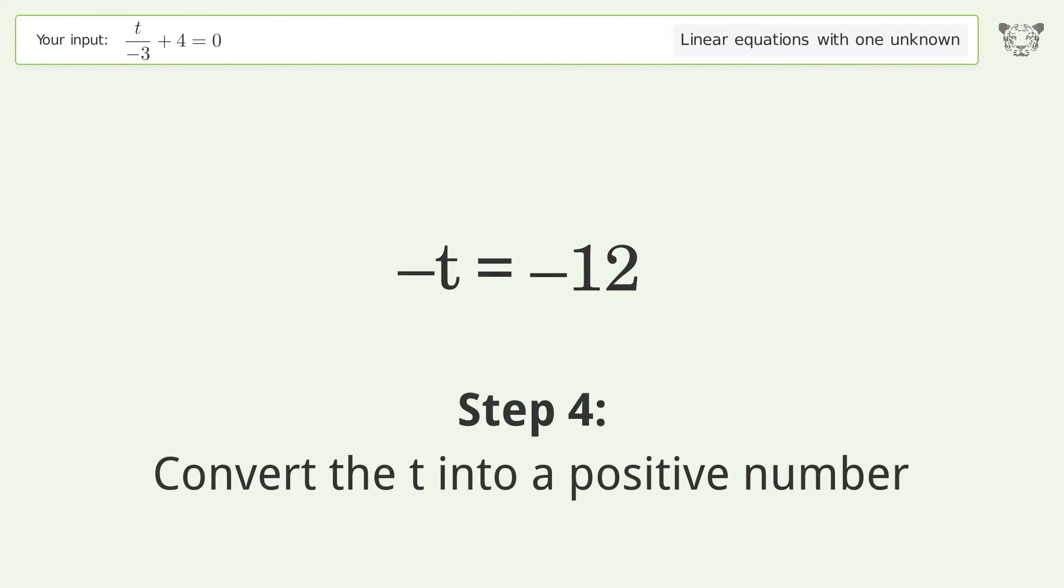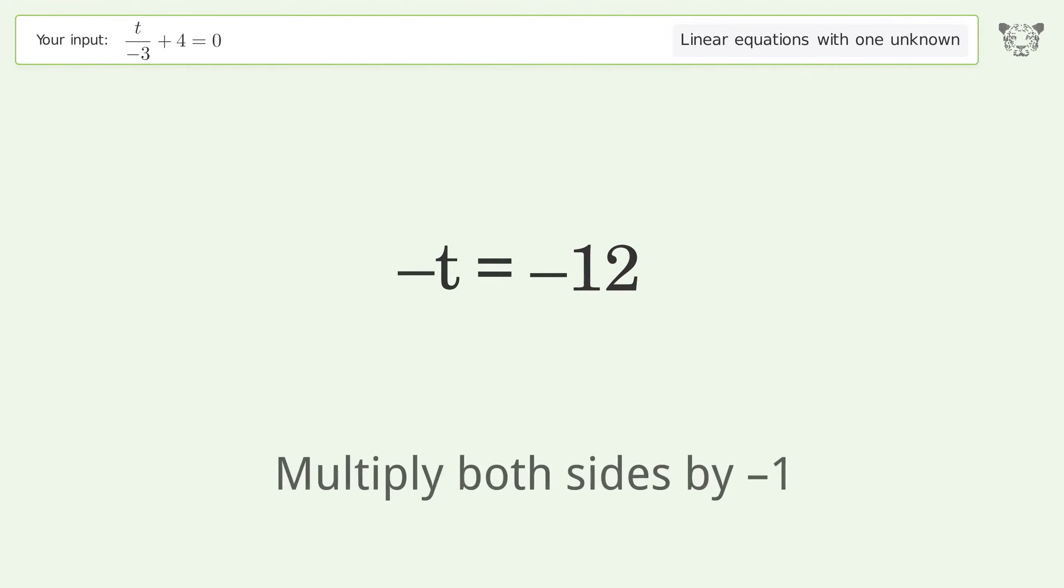Convert the t into a positive number. Multiply both sides by negative 1. Remove the ones. Simplify the arithmetic.